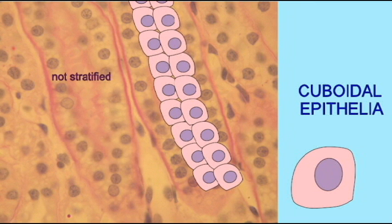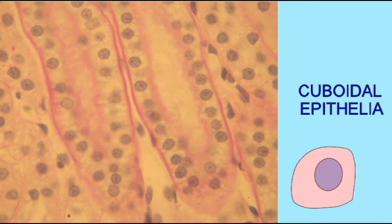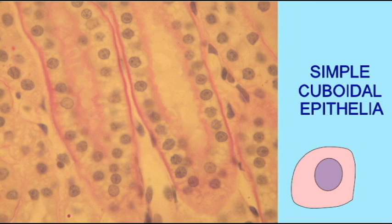This is a simple epithelium. There is only one layer of these simple cuboidal cells. It is not stratified because there are not multiple layers of these cells. So this is an example of simple cuboidal epithelia.